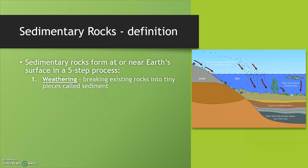The first step in the process to make a sedimentary rock is weathering. This is the breaking of existing rocks into tiny pieces called sediment. When water or wind moves over rocks, it breaks them down into smaller pieces very slowly over time.